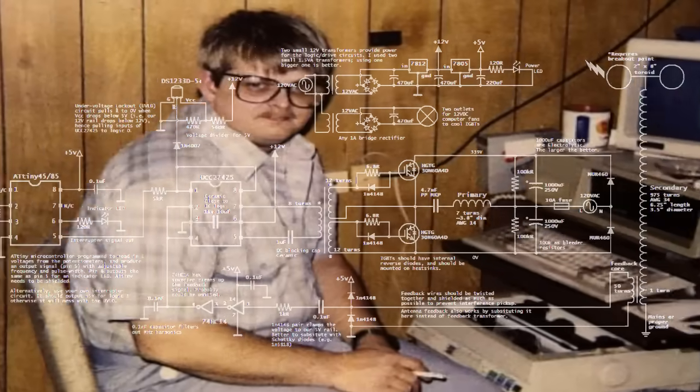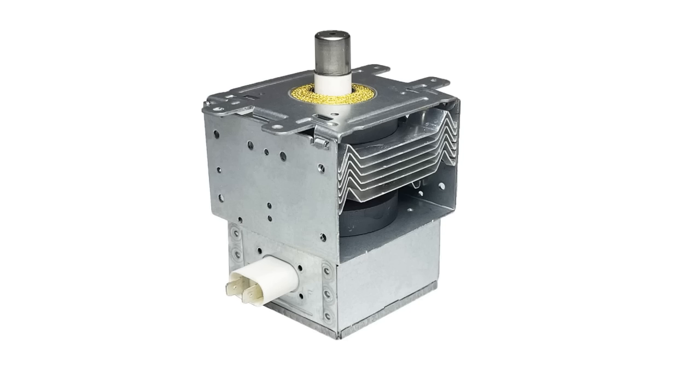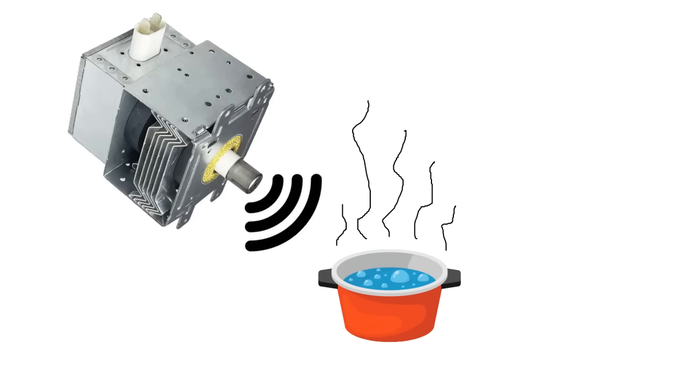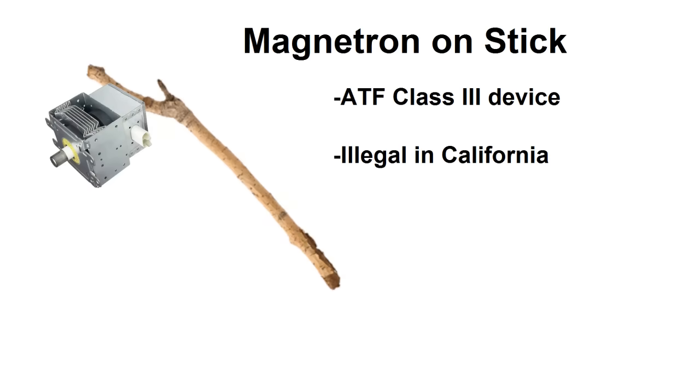Alright, so if you've hung around the electronics tinkering side of YouTube at all, you've probably seen this before. This is the magnetron from a microwave oven, which can transmit around 1000 watts at 2400 megahertz or 2.4 gigahertz. This thing can be used to ionize gases to plasma from a distance, heat up anything with water in it, and a bunch of other weird and possibly dangerous things.